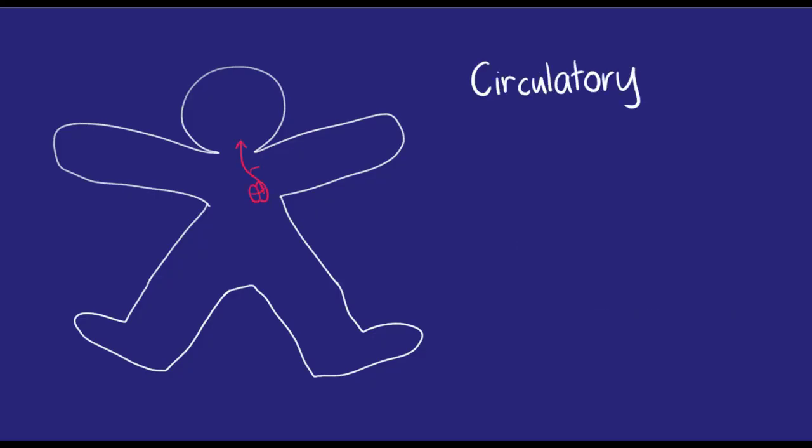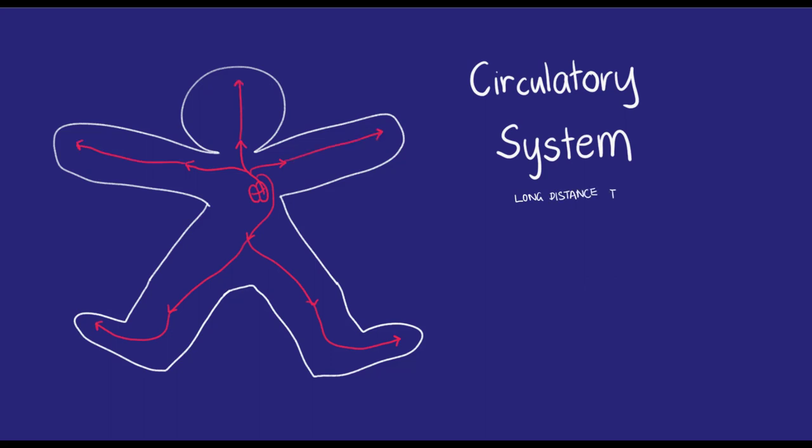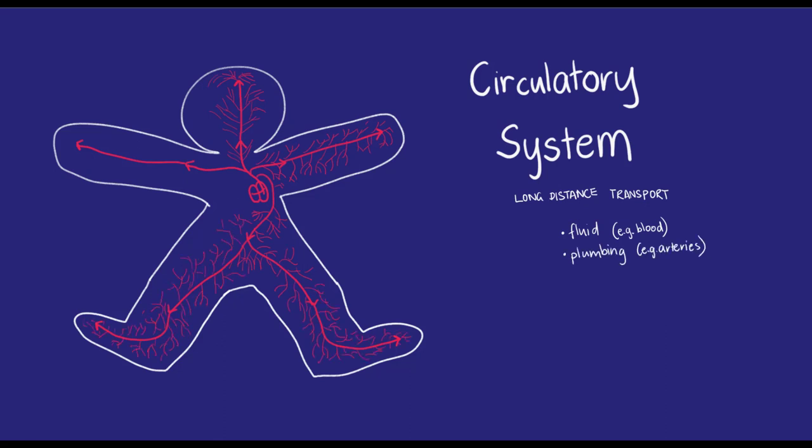For long distance bulk transport, most animals need a circulatory system. This includes a special fluid like blood, plumbing like arteries, and a pump system like a heart.